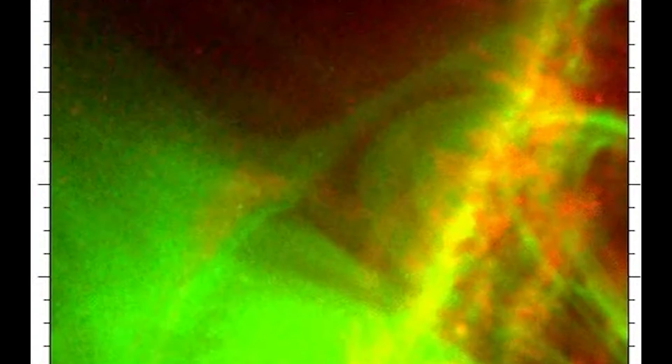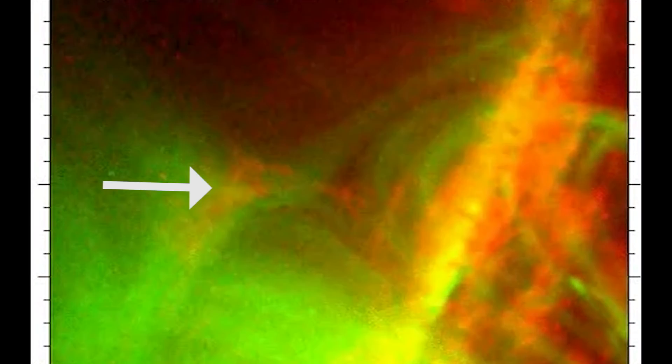En route, the prominence ran into a snarl of magnetic field lines, causing them to reconnect in a distinct X shape.